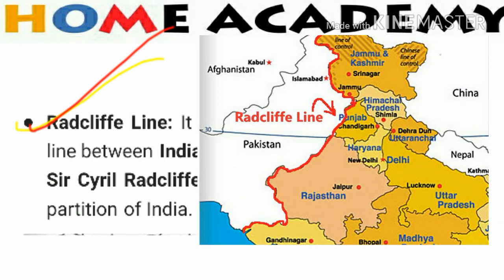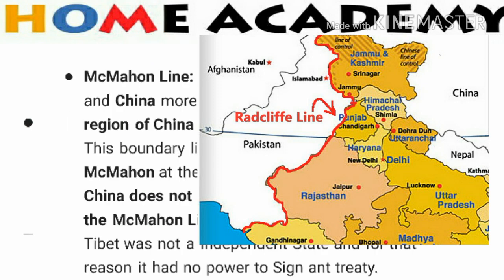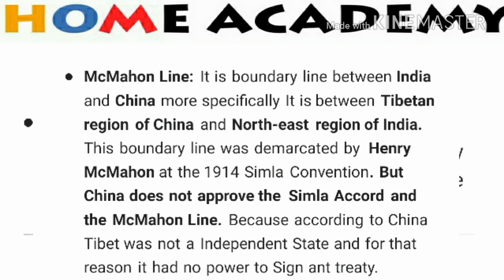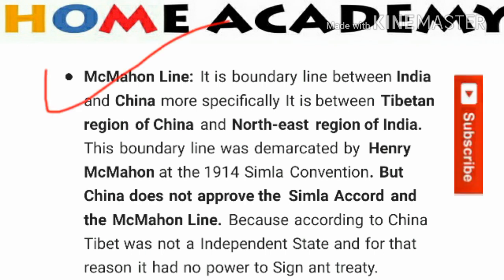The first is the Radcliffe Line. The Radcliffe Line is a demarcation line between India and Pakistan. It was drawn by Sir Cyril Radcliffe on 17th August 1947 during the partition of India.